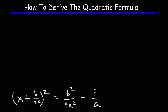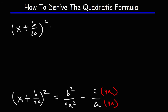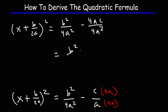Next we want to convert the right side from two fractions into one fraction. To combine two fractions we need common denominators, so we multiply the top and bottom of c over a by 4a. That gives us (x + b/2a) squared equals b squared over 4a squared minus 4ac over 4a squared. Now that we have common denominators we can combine into a single fraction: b squared minus 4ac all over 4a squared.